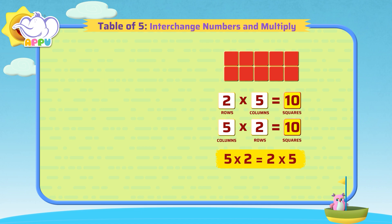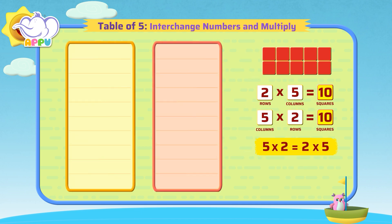This will be true for all numbers. Let's see. 5 times 1 equals 5. We can write it as 1 times 5 equals 5.